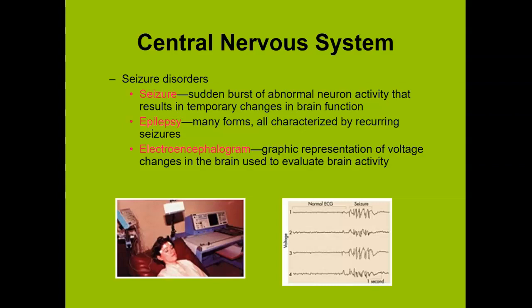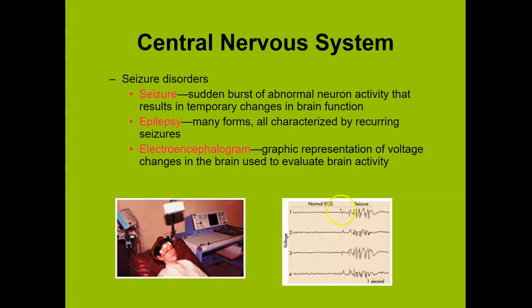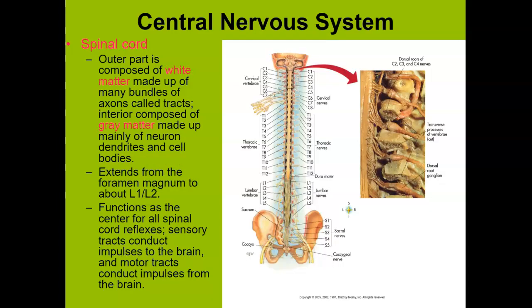To diagnose a seizure, they'll put somebody in an ECG machine and place electrodes on their forehead. This records electrical activity coming from neurons in the cerebral cortex. When a seizure happens, it's characterized by a wild burst of activity inside neurons in the brain. The electroencephalogram is a graphic representation of the voltage changes in the brain as a consequence of neurons firing inappropriately.